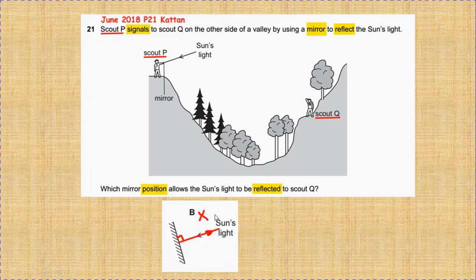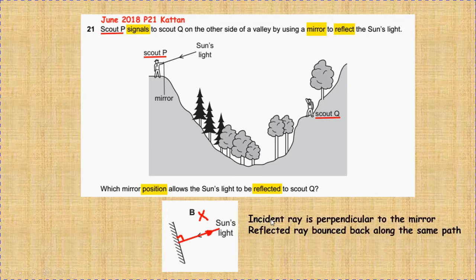For B, which is incorrect, because the incident light ray is perpendicular to the mirror, behaves as normal, and the reflected ray bounces back along the same path of the incident light ray away from scout Q.